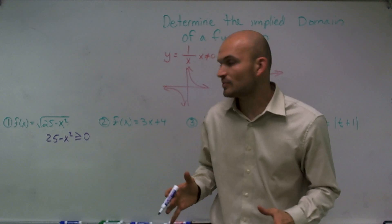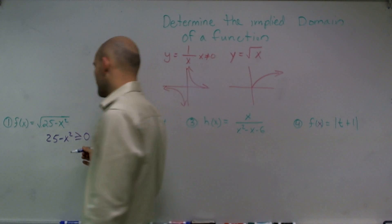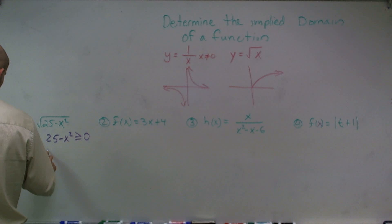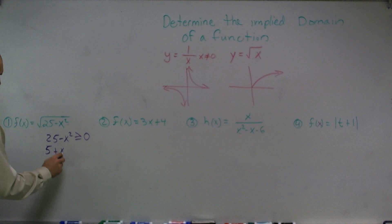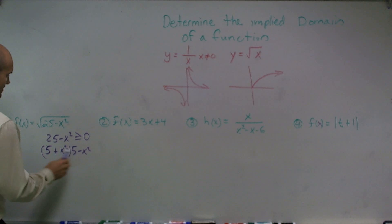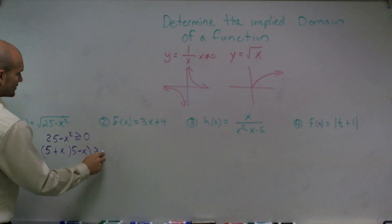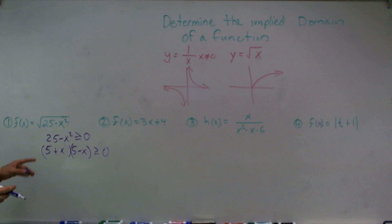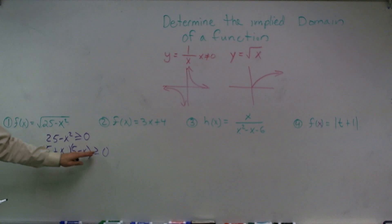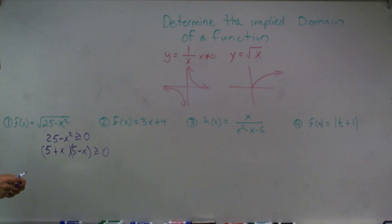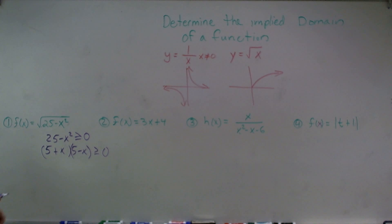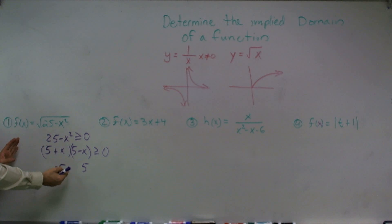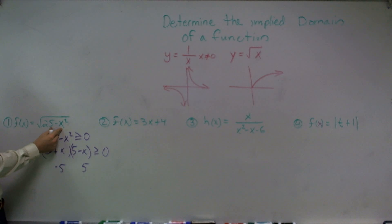So all those values, for it to be a part of my implied domain, have to be greater than or equal to 0. I'll rewrite this as a difference of two squares: x plus 5 times x minus 5, which is greater than or equal to 0. What we notice is now we have two test points: negative 5 and 5. I need to determine when the values between these two test points are going to make my equation true. Any number that's going to make this negative is not going to be a part of my implied domain.